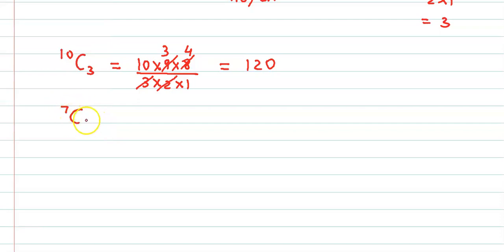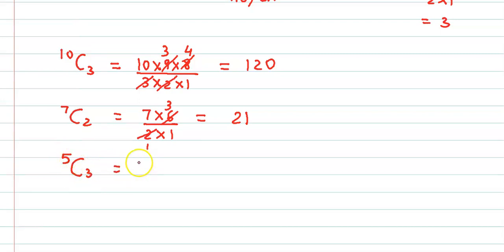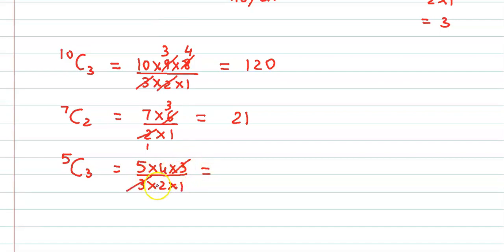Similarly, for 7C2: starting with 7, write two terms in the numerator — 7 into 6 — and divide by two factorial, which is 2 × 1. So 42 / 2 = 21. For 5C3: write three terms — 5 × 4 × 3 — divided by 3 × 2 × 1. The 3s cancel, giving 5 × 4 / 2 = 10.